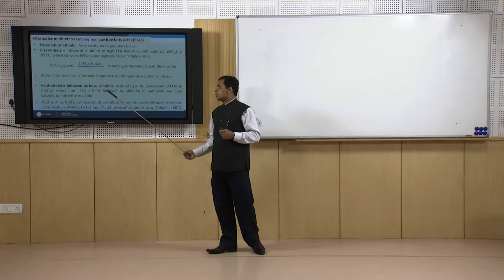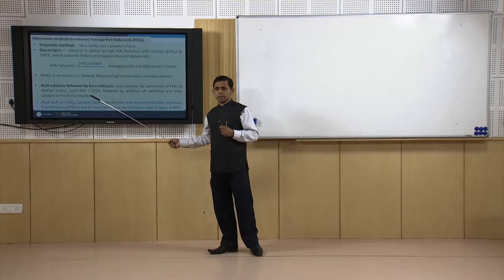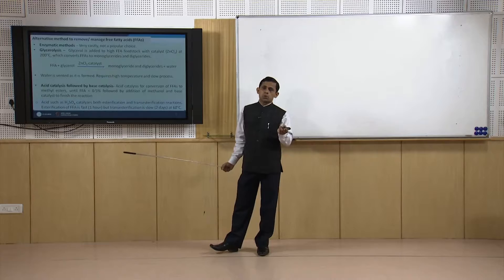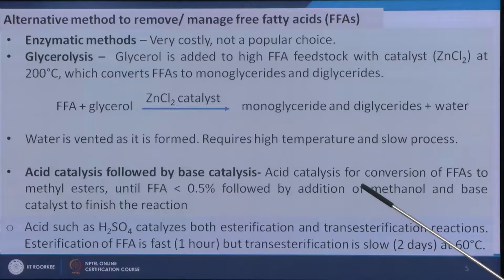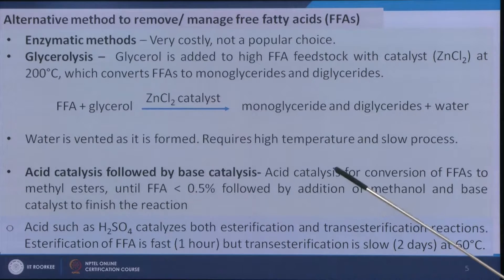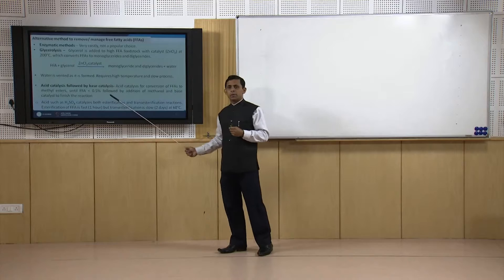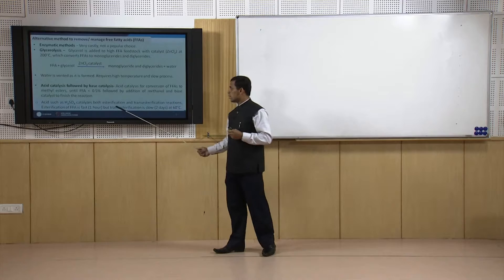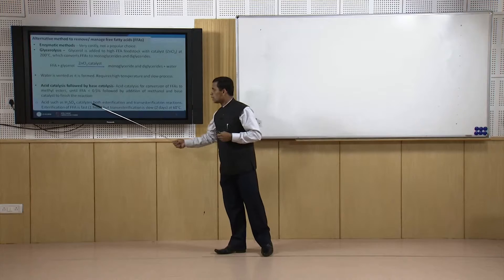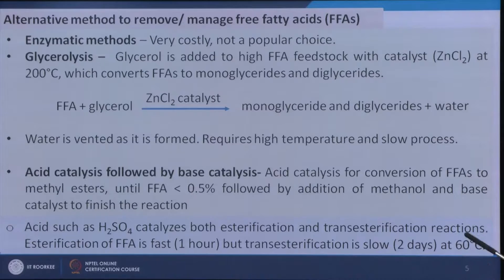In the acid-then-base approach, initially acid is used when free fatty acid content is around 4 percent — acid brings it down below 0.5 percent, and then sodium hydroxide or potassium hydroxide is added for the base catalysis reaction. With acid catalysis, two types of reactions take place: triglycerides are converted to esters and free fatty acids are also converted to esters. Free fatty acids convert very quickly — about one hour is sufficient — but transesterification of triglycerides takes much longer, around two days at 60°C.